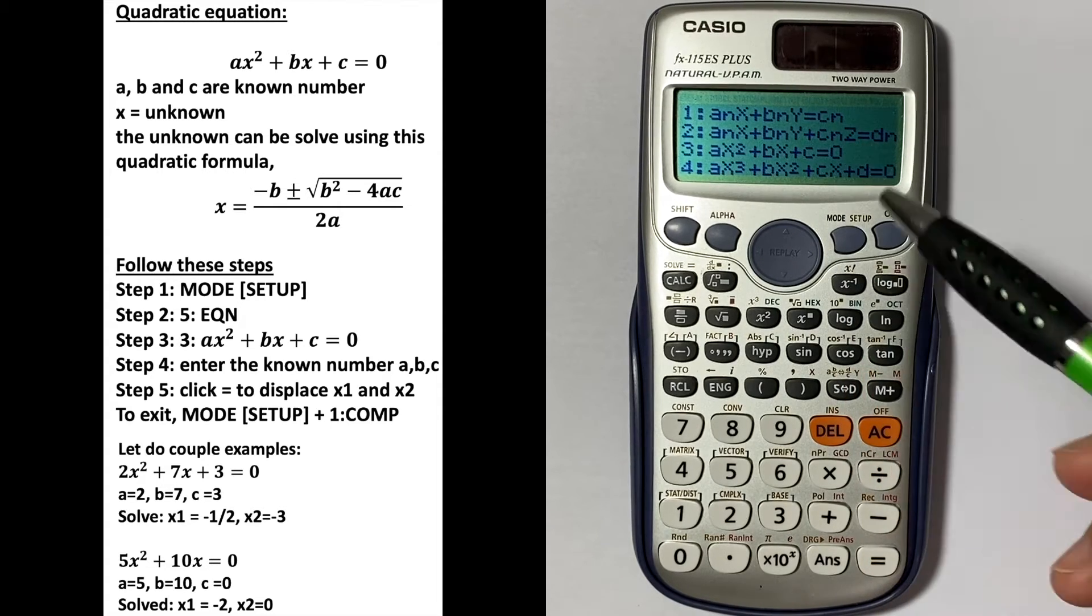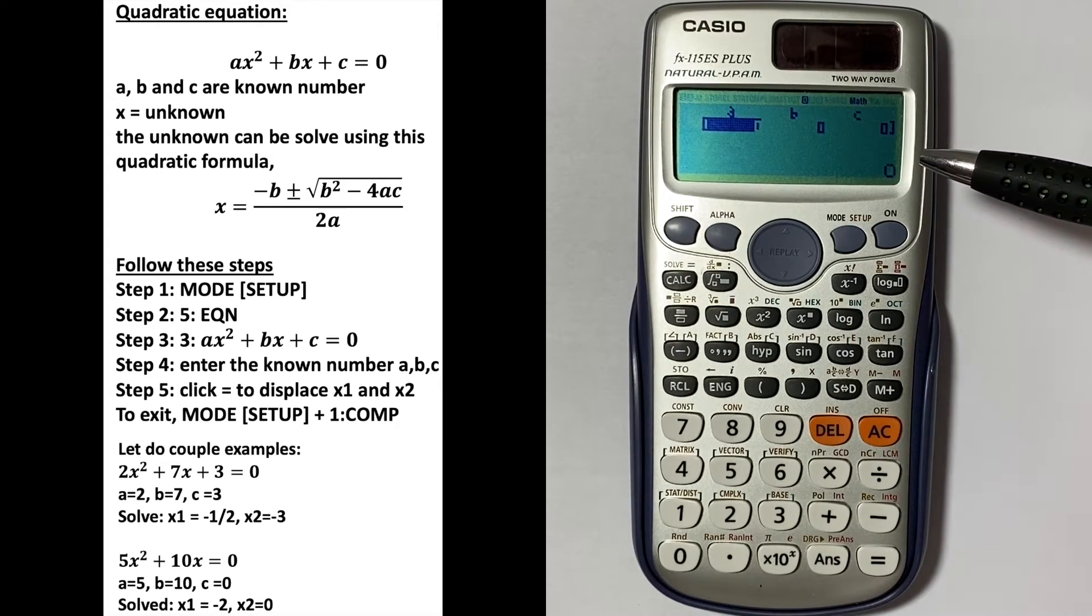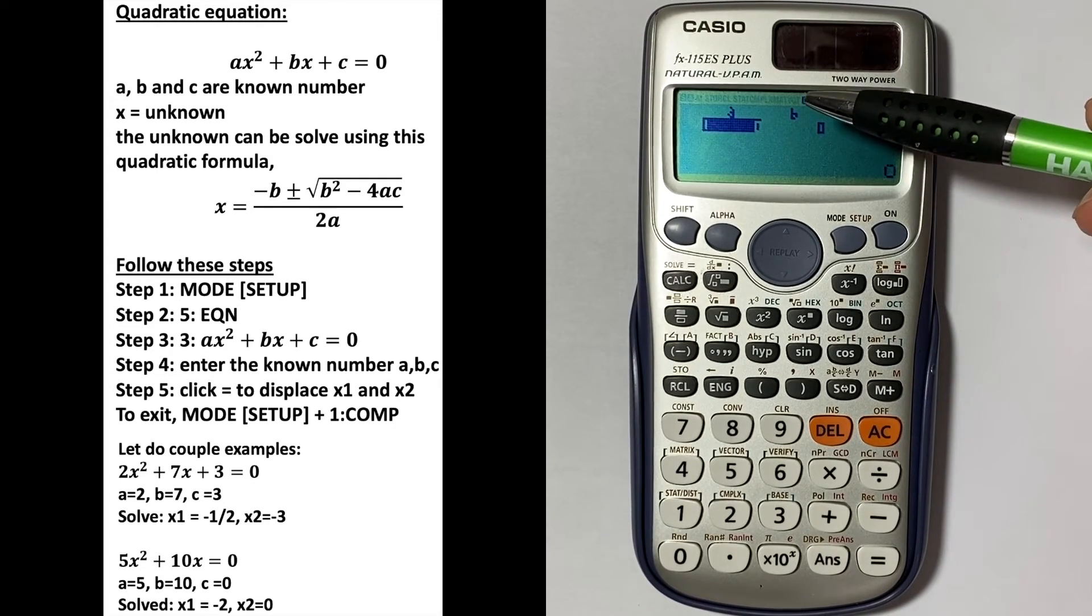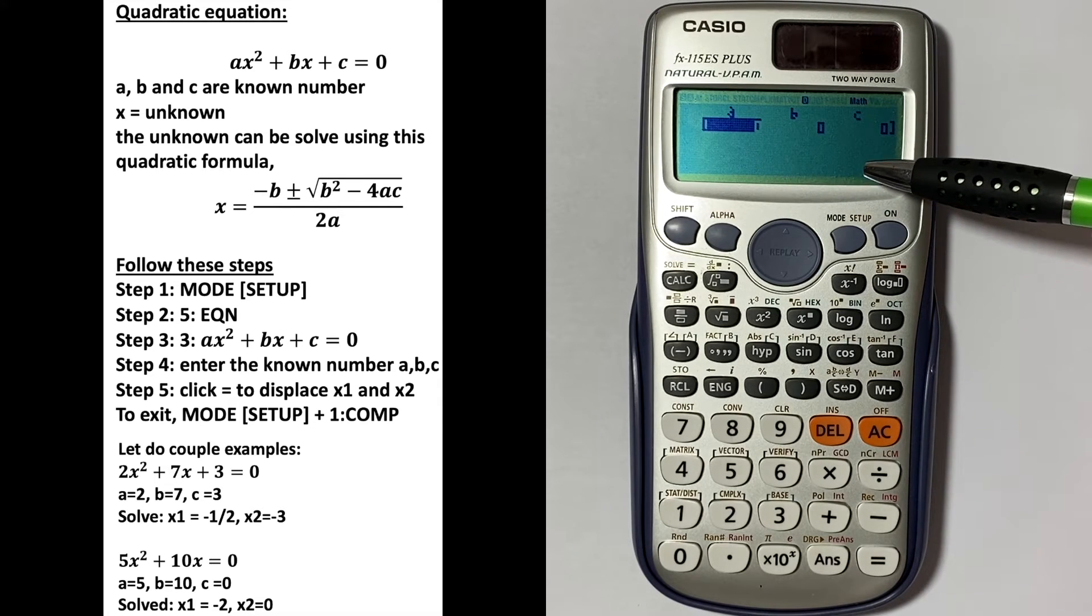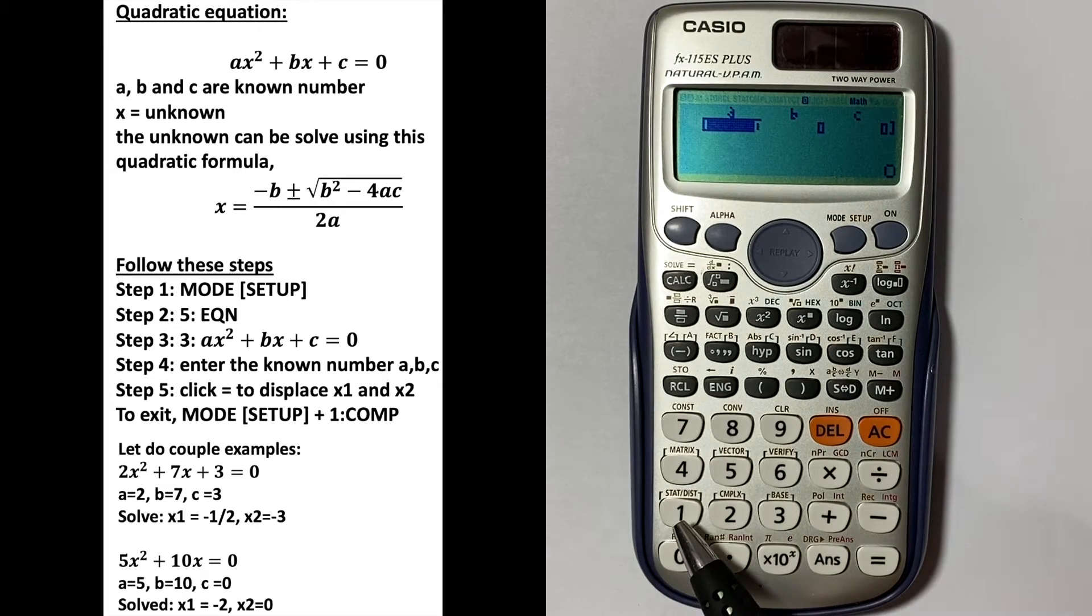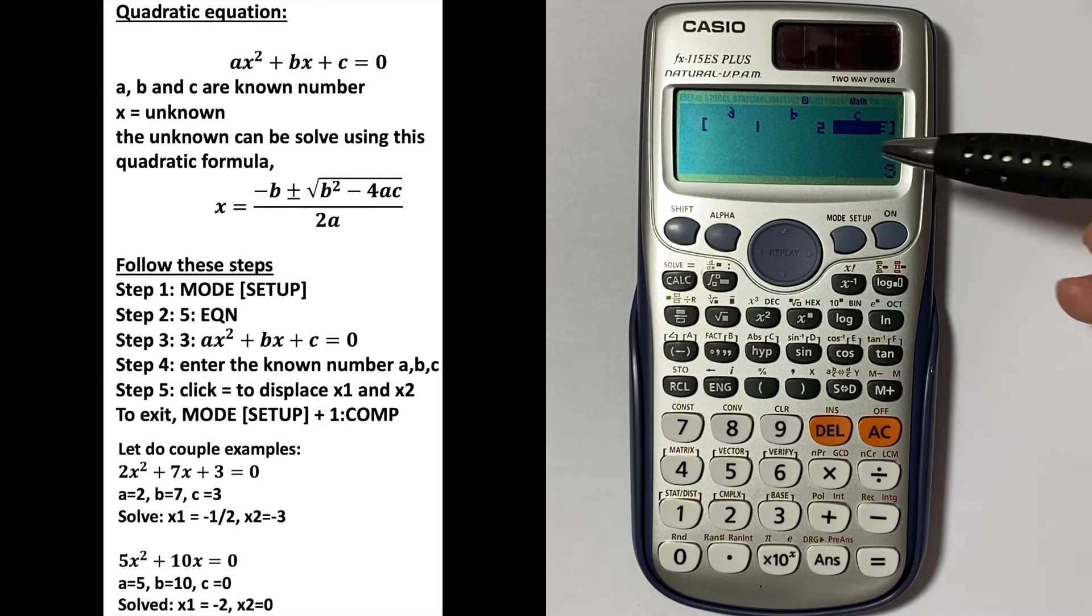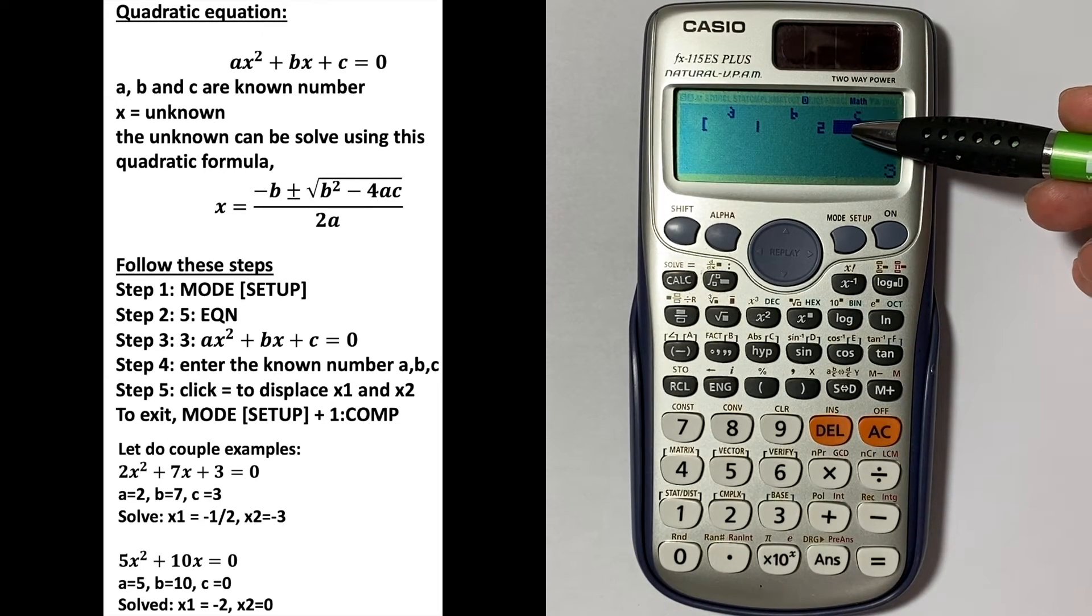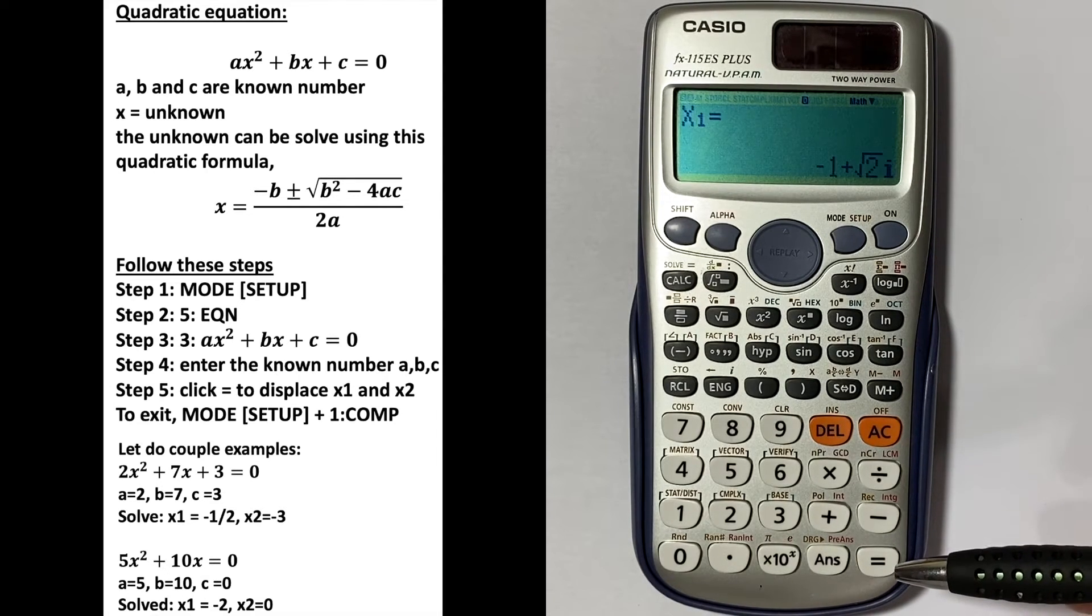Three. Here you see that you can enter the unknowns for a, b, and c. So you can enter, for example, one, two, and three—that's your quadratic equation. When you press equal again, you solve for x1 and x2.